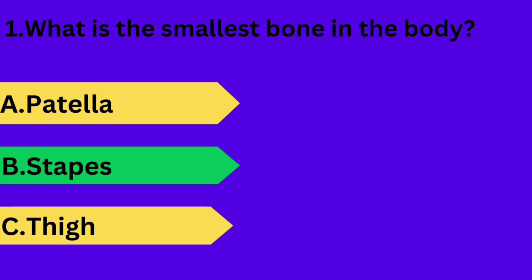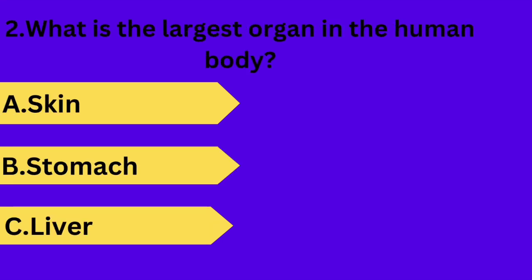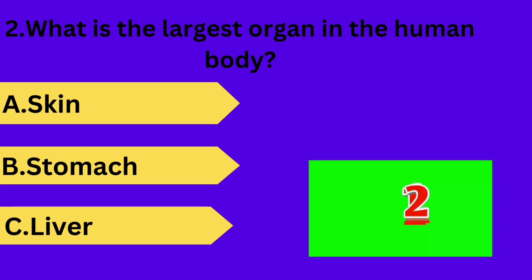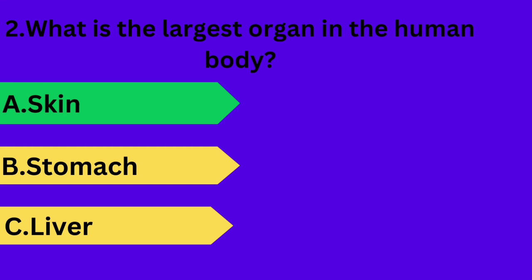And next question is: what is the largest organ in the human body? Option A: skin. Option B: stomach. Option C: liver. Your time starts now. Answer is option A: skin.